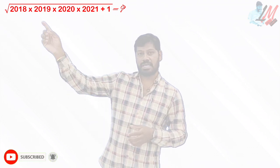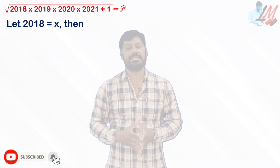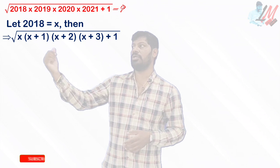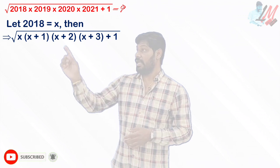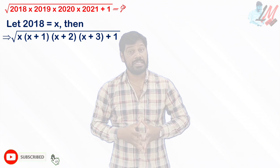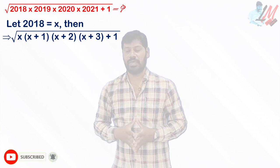To make the expression as simple as possible, I am considering 2018 as x. So if 2018 is x, then 2019 is x+1, 2020 is x+2, and 2021 is x+3. Replacing all the numbers in terms of x, we get the square root of x(x+1)(x+2)(x+3) + 1.